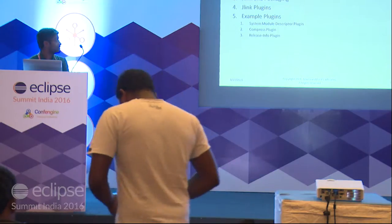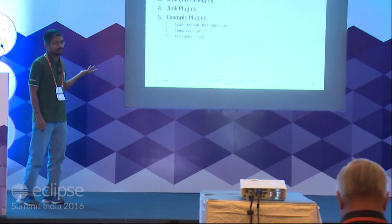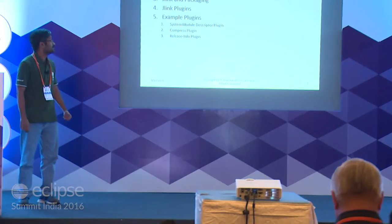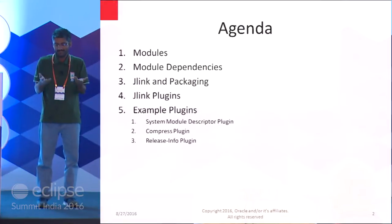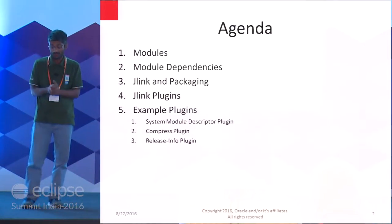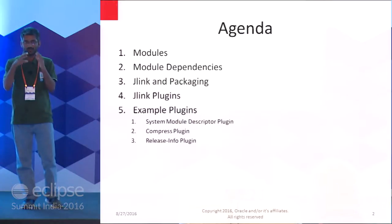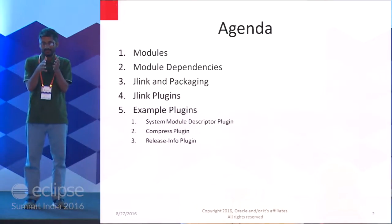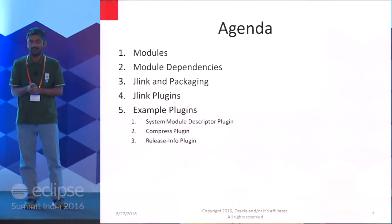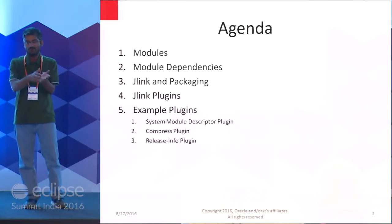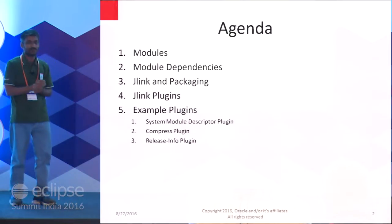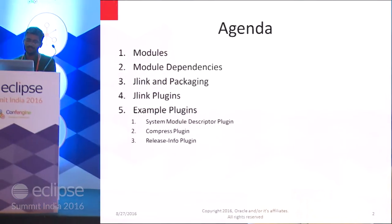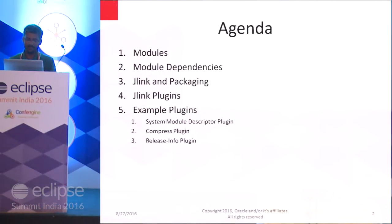The agenda: I'll briefly cover modules, module dependencies, and then J-Link and packaging. This talk is more about the way JDK 9 impacts the development environment — be it writing code, testing, deploying, or configuring. I will also introduce J-Link plugins, some of the built-in plugins, and some of them which are shipped with JDK 9.